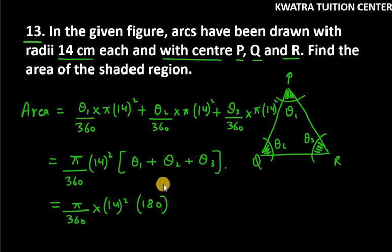Now you can cancel 360 and 180, it will be 1 over 2. And now we have pi, pi is 22 over 7, into 2 at the bottom, and at the numerator we have 14 into 14.